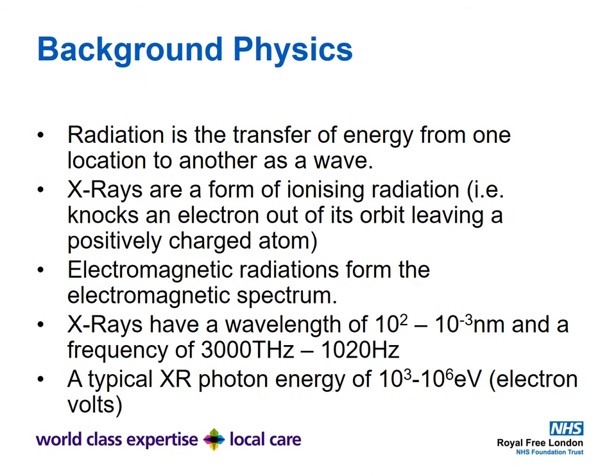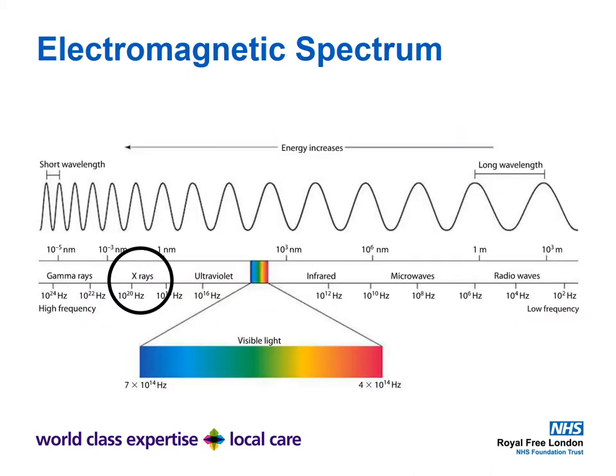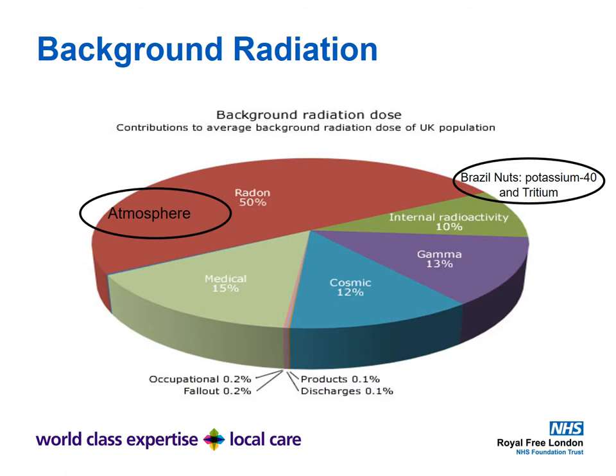I hate to bore you with physics so early on, but it is important to have a basic understanding when it comes to X-rays and ionizing radiation. Radiation is a transfer of energy from one location to another as a wave. X-rays are a form of ionizing radiation — they knock an electron out of its orbit, leaving a positively charged atom. X-rays have a wavelength of 10² to 10⁻³ nanometers, a frequency of 3000 terahertz to 10²⁰ hertz, and a typical photon energy of 10³ to 10⁶ electron volts. Here is the electromagnetic spectrum which I'm sure you all remember from your physics courses.